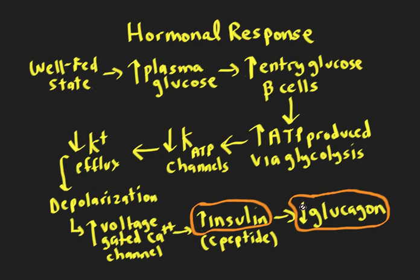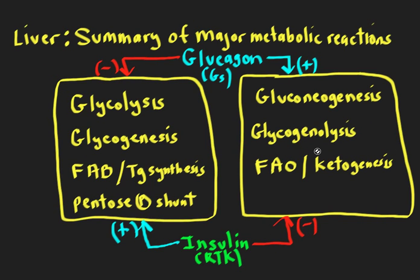Now that we know insulin is high, we'd expect glycolysis, glycogenesis, fatty acid synthesis, triglyceride synthesis, and the pentose phosphate shunt to all be turned on. At the same time, gluconeogenesis, glycogenolysis, fatty acid oxidation, and ketogenesis are all going to be turned off. And with glucagon levels low, that supports all of this. Let's take a closer look at the specific mechanisms involved.